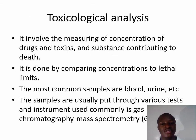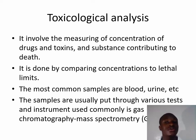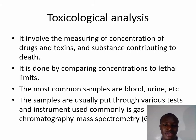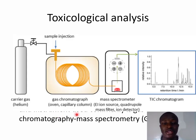Toxicological analysis involves the measurement of the concentration of drugs, toxins, and substances contributing to death. For example, if somebody took or was injected with poison, we can perform toxicological analysis to determine the cause of death. This is done by comparing the concentration to lethal limits — there is a lethal dose at which a certain amount of a substance leads to death. The most common samples used are blood and urine, analyzed using gas chromatography mass spectrometry (GC-MS).